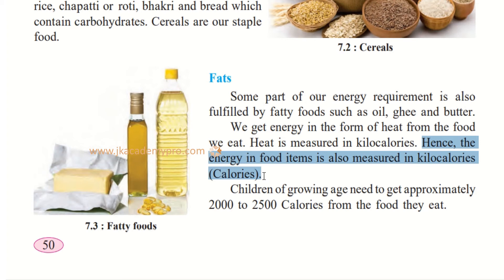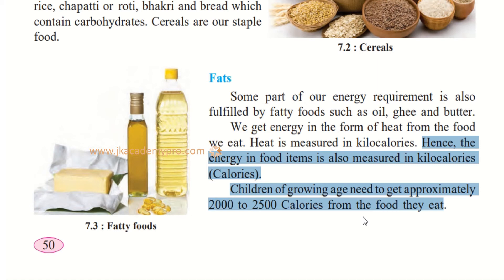Children of growing age need to get approximately 2,000 to 2,500 calories from the food they eat. Children require a lot of energy to grow and to do various activities — you need to play, run about, and do various kinds of activities. So children should get 2,000 to 2,500 calories daily from breakfast, lunch, dinner and snacks, eaten in a wholesome manner.